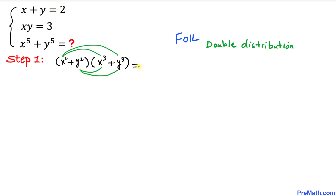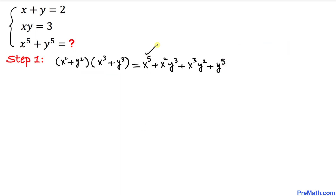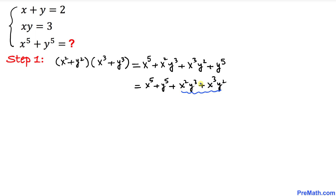Multiplying through, this gives us x power 5 plus x square y power 3, then x power 3 y square, and plus y power 5. Rearranging these terms: x power 5 plus y power 5, and then x square y power 3 plus x cube y square. We can see that x square y square is common in those two middle terms.